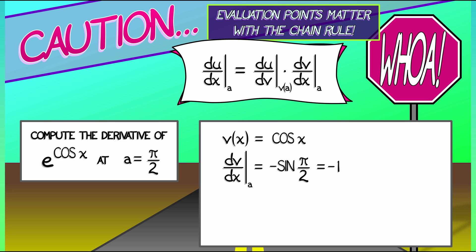The outer function u of v is that exponential e to the v. What's the derivative of e to the v with respect to v? We know that. It's e to the v, but we have to evaluate it not at pi over 2, but at cosine of pi over 2. So the derivative of u with respect to v evaluated at v of a is really e to the 0, and that is simply 1.